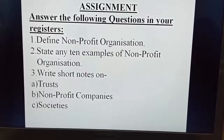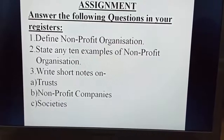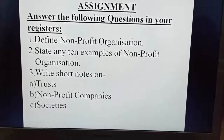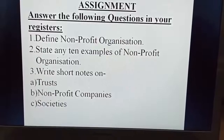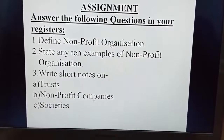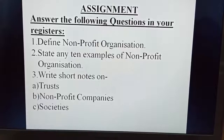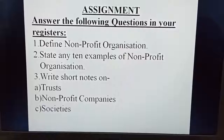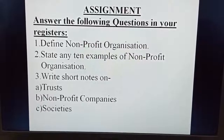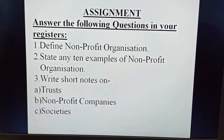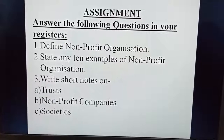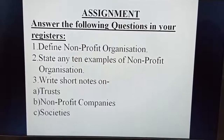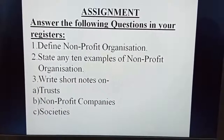The third question is: write short notes on the following. First topic — Trust: A trust is an organization formed when a rich person or entity transfers property either in cash or in kind and a trust agreement is executed, with the motive of helping the society and not earning profit. For example, Ratan Tata Trust or Doraabji Tata Trust, which aims to help weaker section students in pursuing higher education.